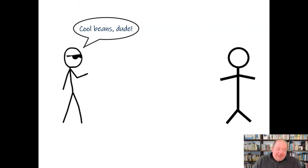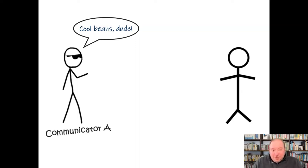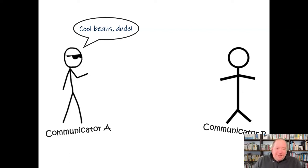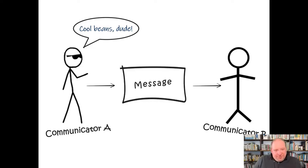This person is communicating something to another person — it could be to another person, a group of people, or even to himself. The first elements we can recognize are communicator A and communicator B. We used to call them sender and receiver, but the truth is they're both sending and receiving at all times, so it's easier to call them communicator A and communicator B. Communicator A has something he wants to communicate to communicator B — the content of what that person is trying to communicate, we call the message. The message here is 'cool beans dude.'